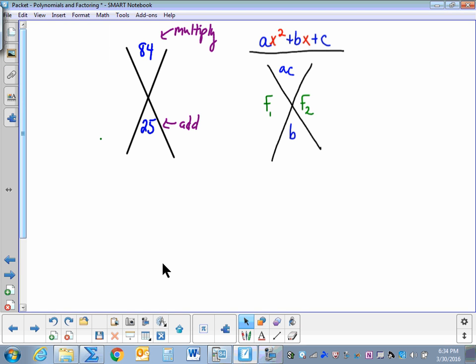Here's how to use the graphing calculator to help you factor. When we factor, in this instance we have the number 84. We need the factors of 84 that add to 25. So to do this we'll use our graphing calculator.